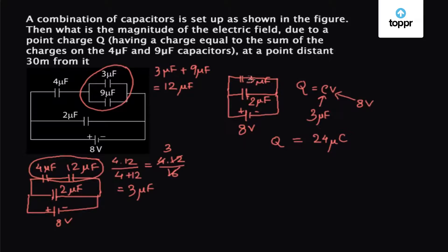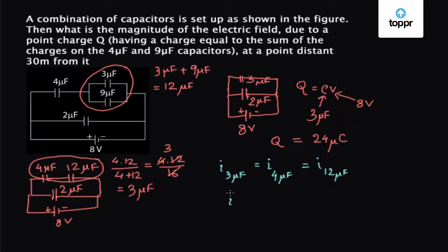Now, the charge on the 3 microfarad capacitor is the same as the charge on the 12 microfarad and the 4 microfarad capacitor each, because the current that flows through the 4 microfarad capacitor and the 12 microfarad capacitor is the same and equal to the current flowing through the 3 microfarad equivalent. So let's say I is the current flowing through the 3 microfarad capacitor, which equals the current through the 4 microfarad, which equals the current through the 12 microfarad capacitor.